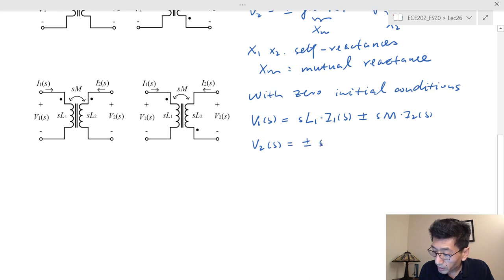And V2(s) is going to be equal plus or minus s times M times I1(s) plus sL2 times I2(s).